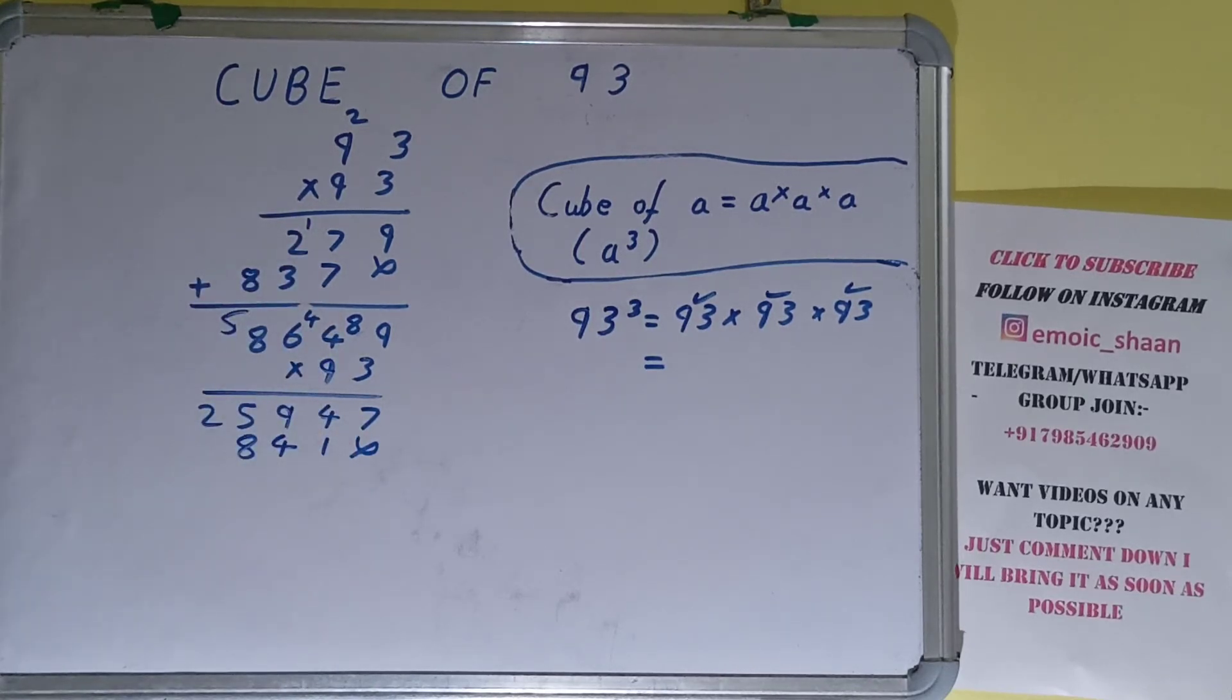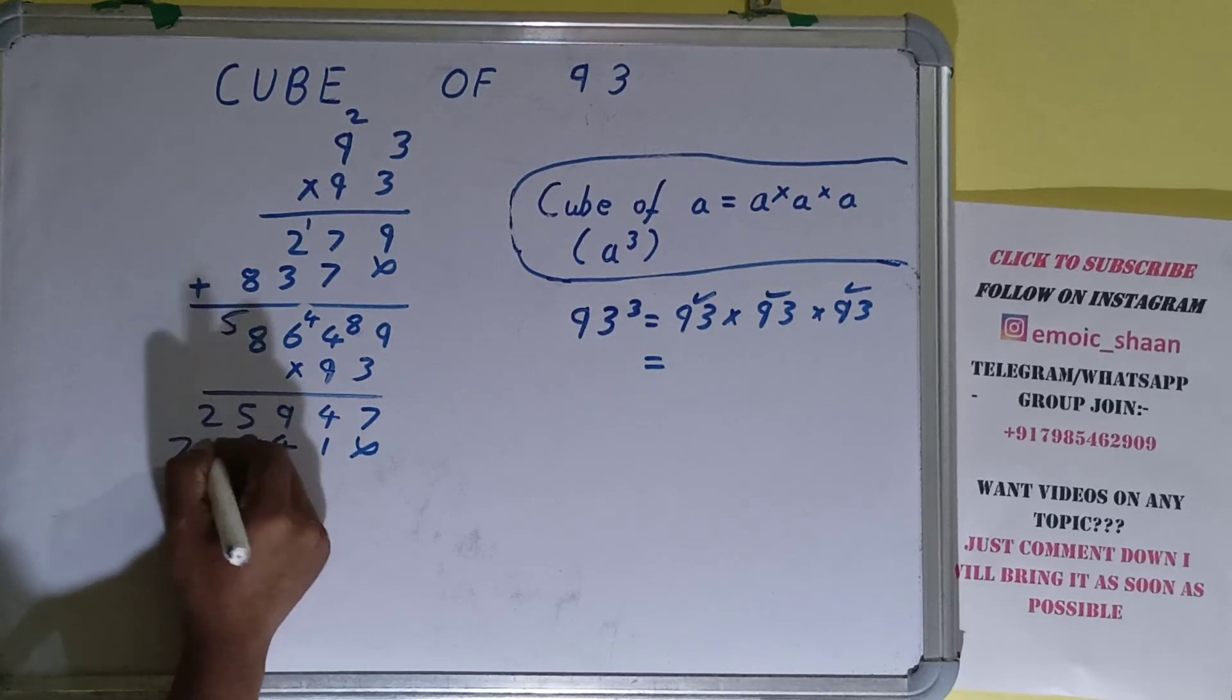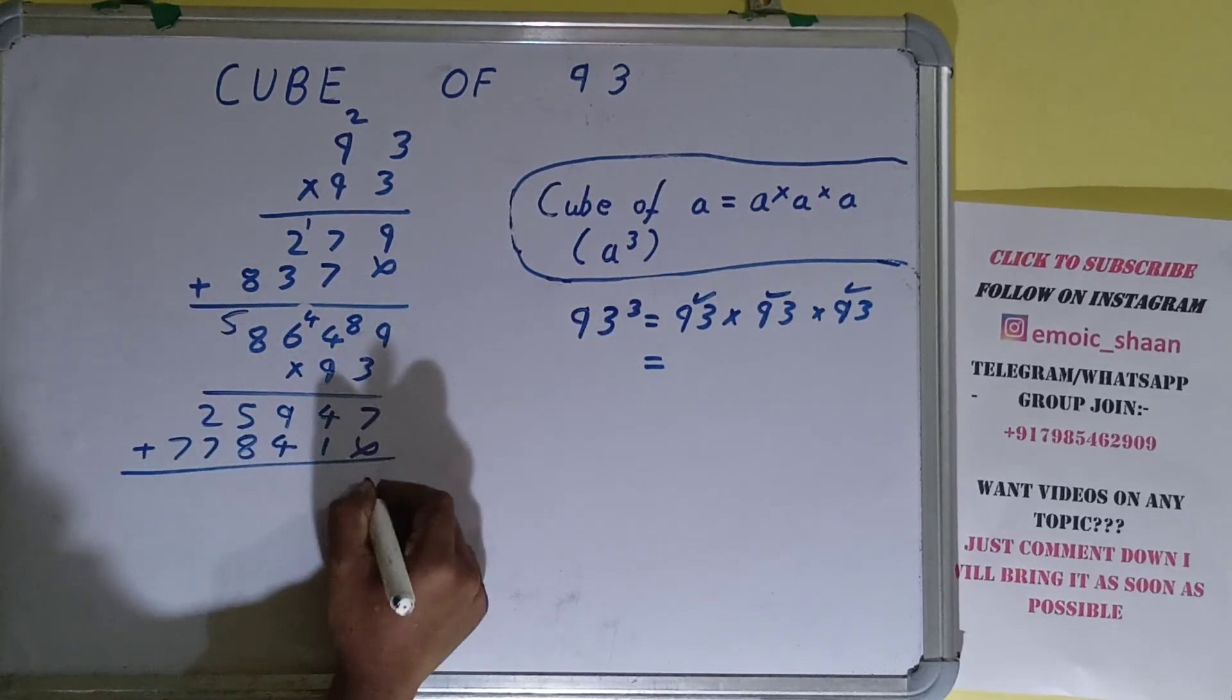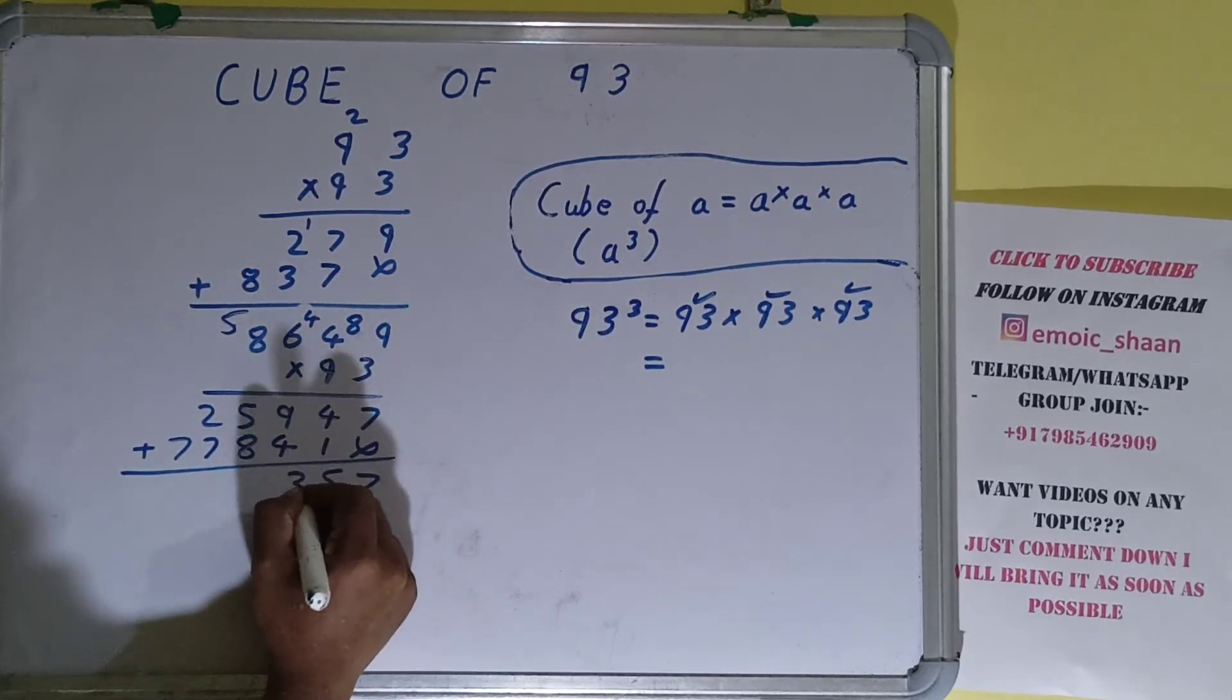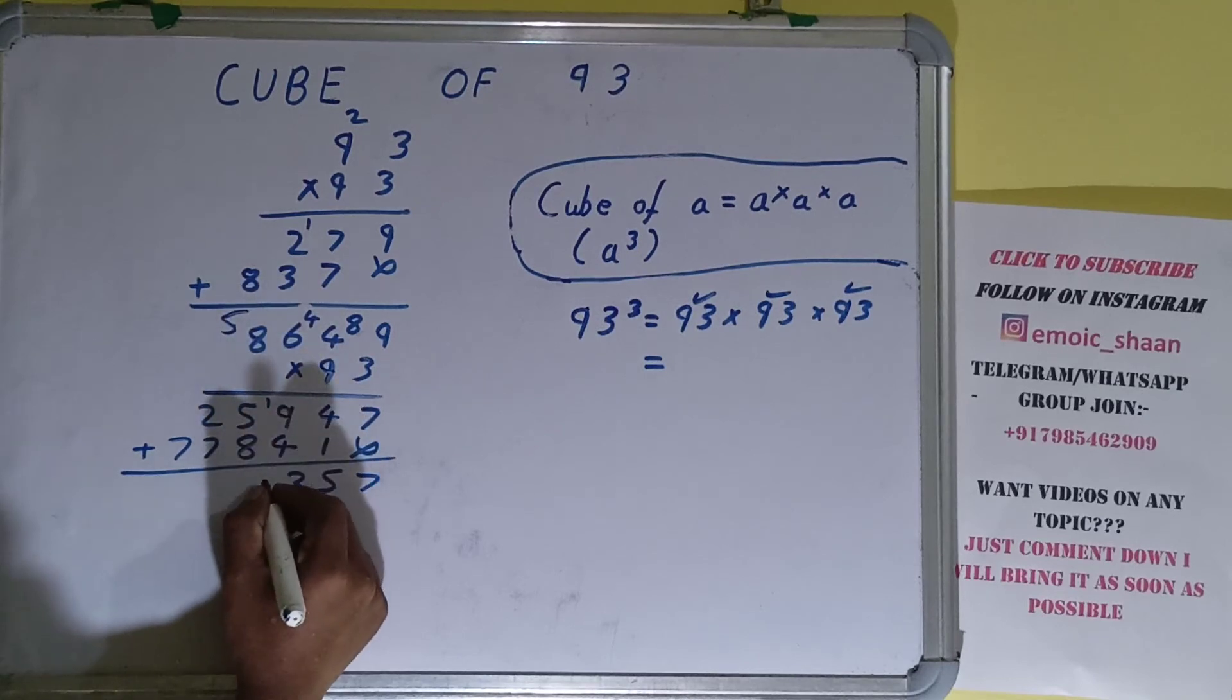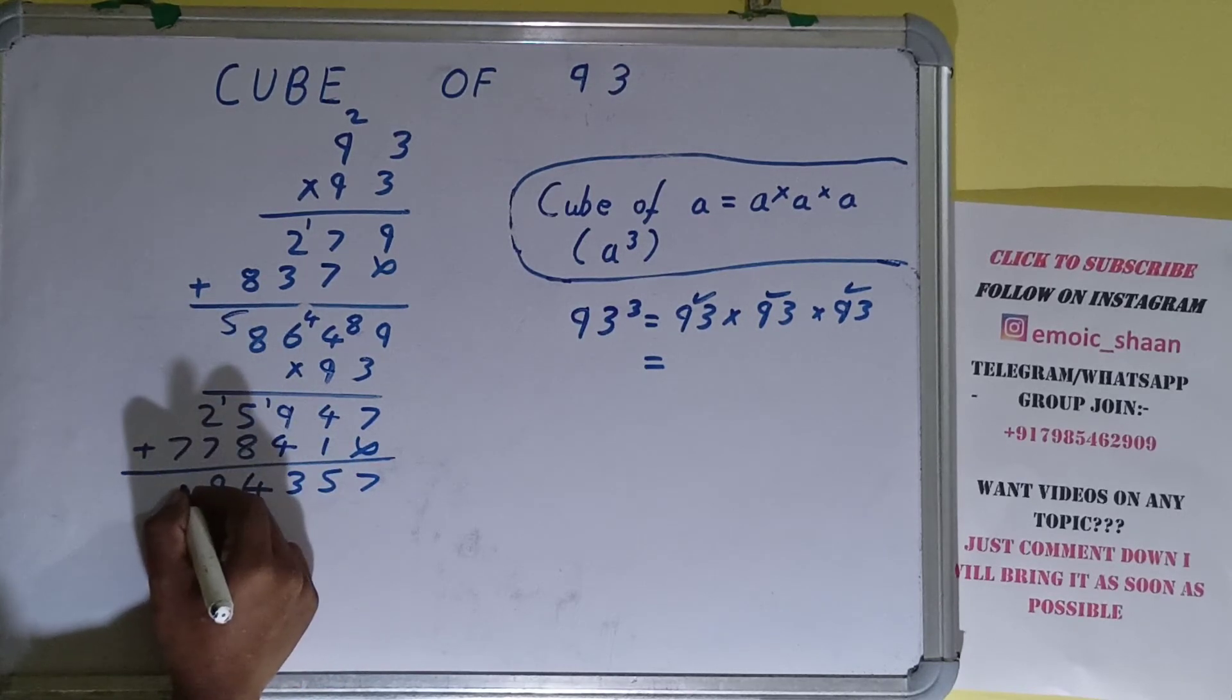9×9 is 72 plus 5 is 77. Just add all. This will be 7, this will be 7, this will be 5, this will be 3, this will be 3, this will be 4, this will be 9.